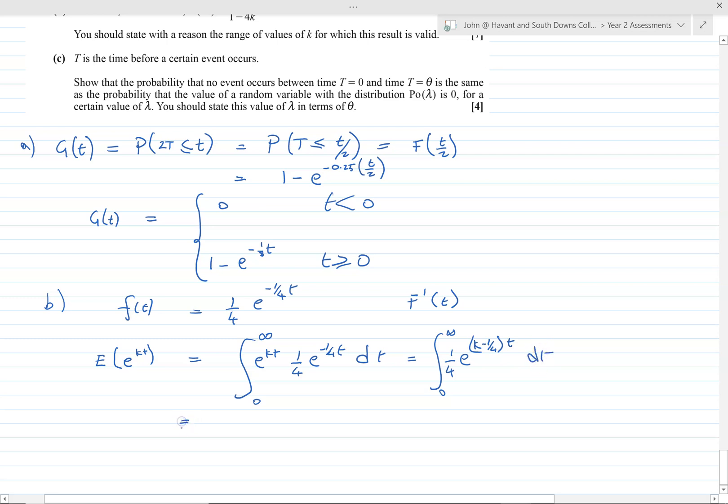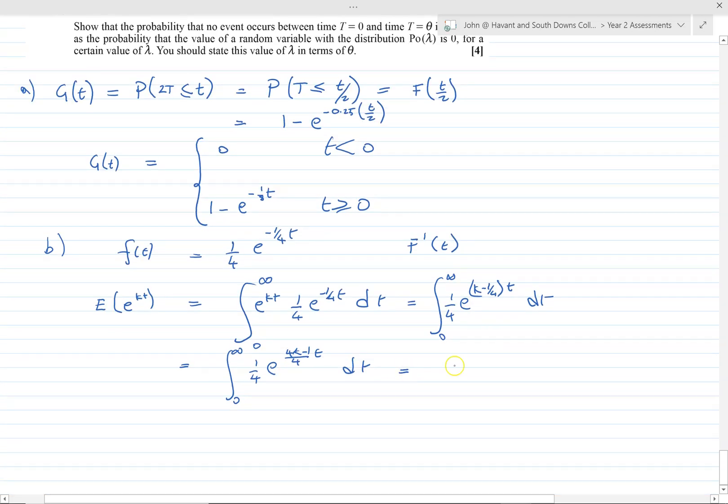I'm going to put that as a common denominator. E to the (4k minus 1) over 4t dt. So integrating that is 1 quarter, we need to times by the reciprocal of that. So it's 4 over (4k minus 1), e to the (4k minus 1) over 4t, infinity to naught.